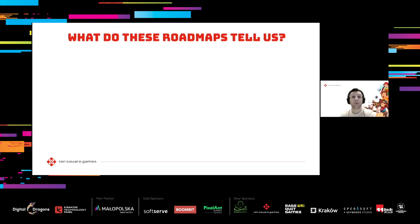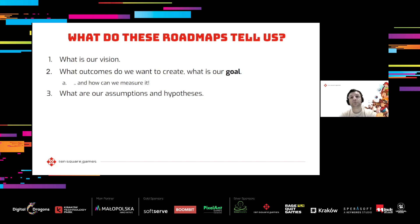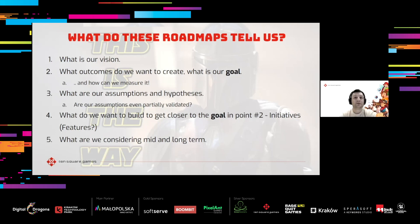Let's recap. What benefits do outcome-based roadmaps bring? We clearly lay out what our vision is, making it easily accessible across the whole company. We know which outcomes we're after — the goals are both clear and measurable. We transparently indicate the assumptions and hypotheses. We're in uncharted territory, and it doesn't hurt to say clearly that we're experimenting and that there's a possibility of learning from experience. We know what we want to build to reach our goals and what the rough next steps are. For me, this is the way. Teams and product managers who embrace this approach are much happier, more focused, and their products perform better.